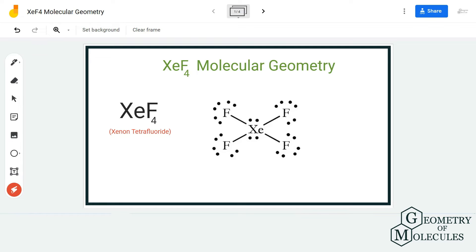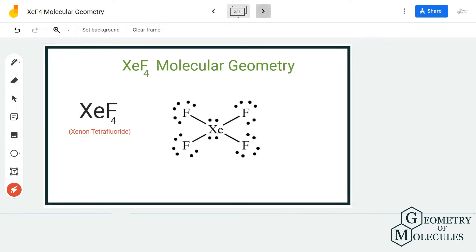All these bonding pairs of electrons and non-bonding pairs of electrons will impact the molecular geometry of xenon tetrafluoride. If you look at its shape in 3D, you can see that all the fluorine atoms are spread out evenly in the structure because of the repulsive forces.